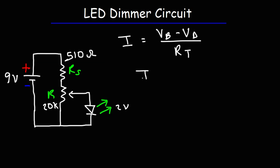So the maximum current is going to be the voltage of the battery, which is 9 volts, minus the voltage of the LED, which is 2 volts. To get the maximum current, we need to use the minimum resistance. The minimum resistance of the potentiometer is zero, ideally speaking. So it's zero plus 510.